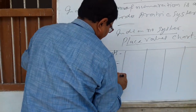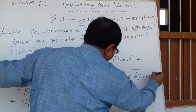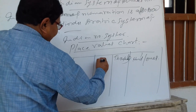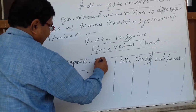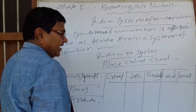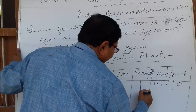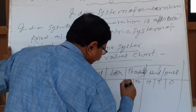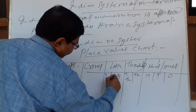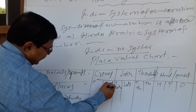The first group is hundreds or ones, divided into three places: one, ten, hundred. And thousands are divided into thousand and ten thousands. Lakhs are divided into lakh and ten lakh. Similarly, crores are divided into crore and ten crores.